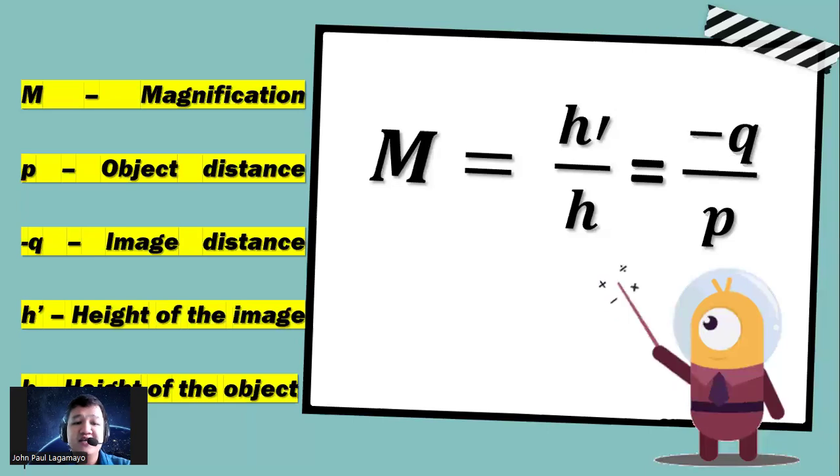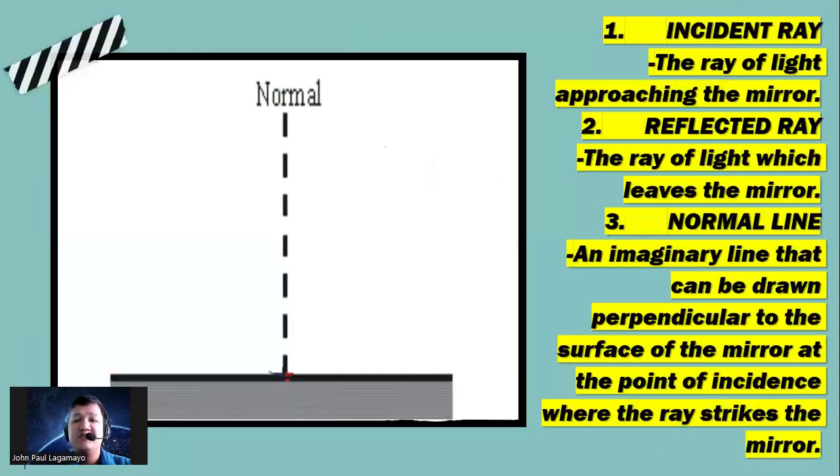We call this one as the magnification on plane mirror. The object distance is always equal to the image distance, and the height of the image is equal to the height of the object. So meaning to say, if the height of the object is 23 centimeters, the height of the image formed in the plane mirror is also 23 centimeters. The magnification would always equal to 1, meaning whatever is the size of the object will be the size of the image formed inside the mirror. The object distance will always equal to the image distance from the mirror.